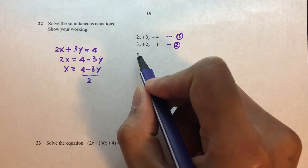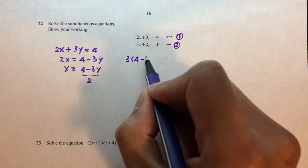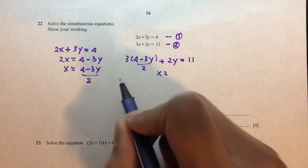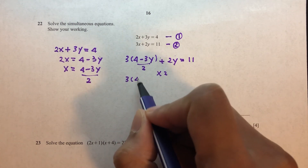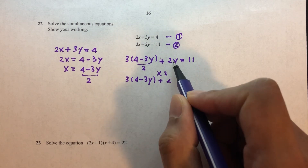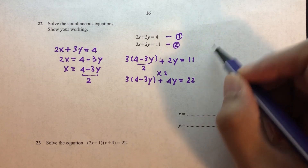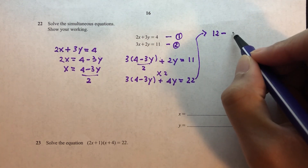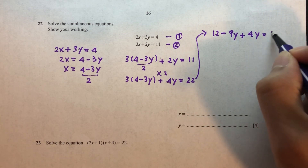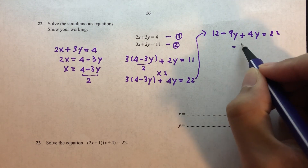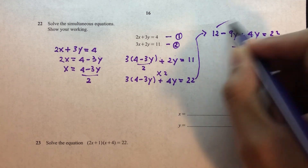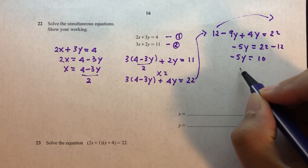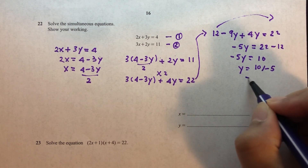Substituting x into equation 2: 3 times (4 - 3y)/2 plus 2y = 11. Multiplying through by 2: 3(4 - 3y) + 4y = 22. Expanding: 12 - 9y + 4y = 22, so 12 - 5y = 22. Therefore -5y = 10, giving y = -2.